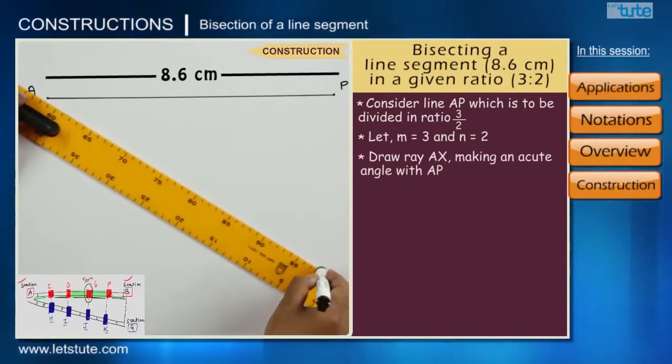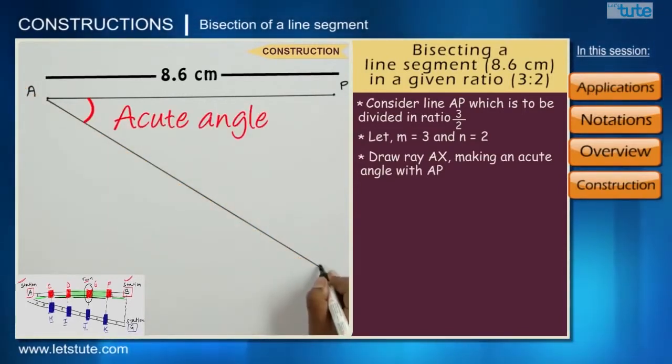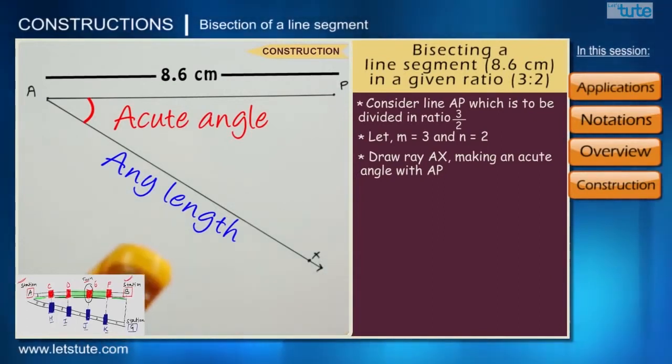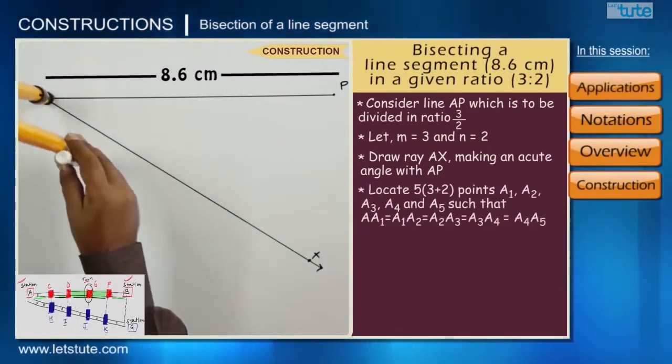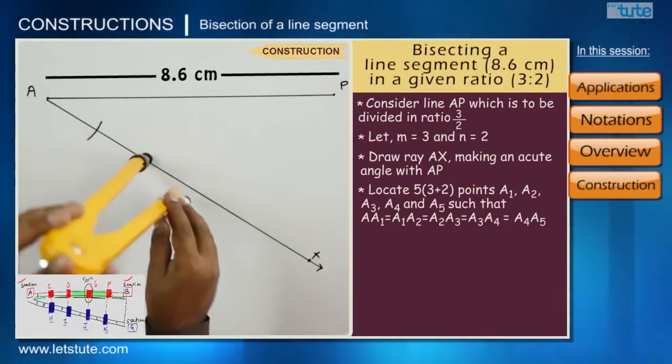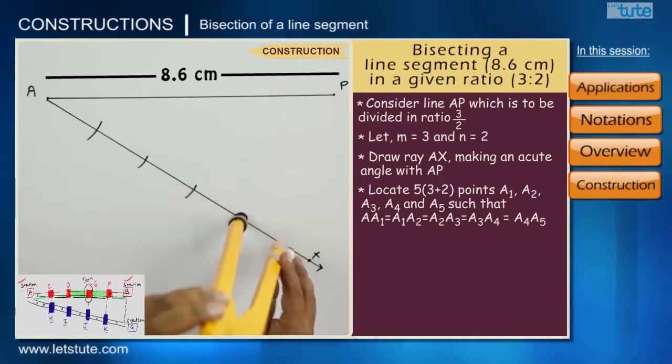For that, let us make a ray at a small acute angle with line segment AP, and let us call it AX. Now, with the help of a compass, divide this ray AX in 5 equal parts. 5 because the ratio is 3 is to 2, so 3 plus 2 gives us 5.